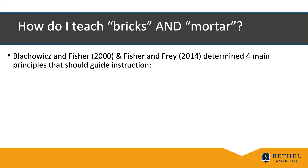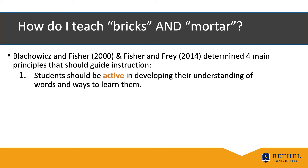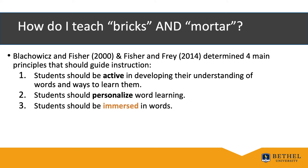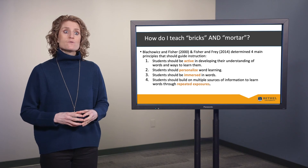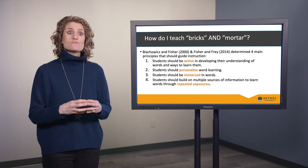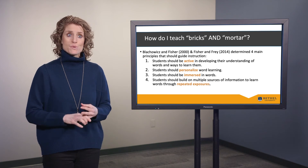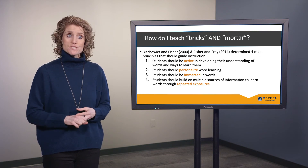Now, I would like to share some research that is helpful in thinking about how to teach both Tier 2 and Tier 3 academic language in any content area. Several researchers have determined four main principles that should guide instruction: Number one, students should be active in developing their understanding of words and ways to learn them. Two, students should personalize word learning. Three, students should be immersed in words. And four, students should build on multiple sources of information to learn words through repeated exposures. So let's talk about how to build academic language in science, keeping these four ideas in mind: active, personalized, immersed, and repeated.